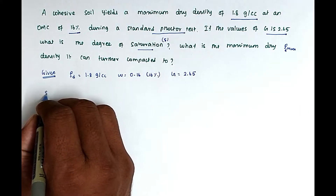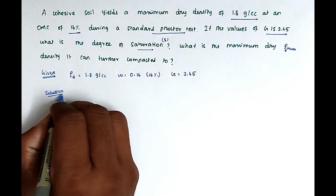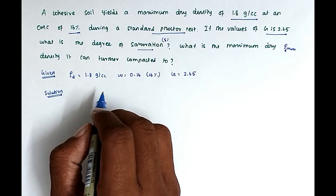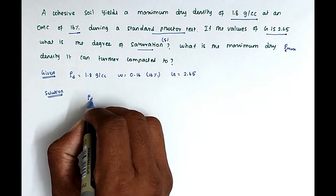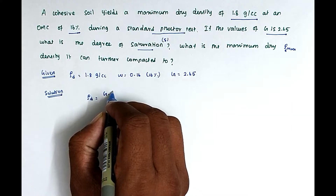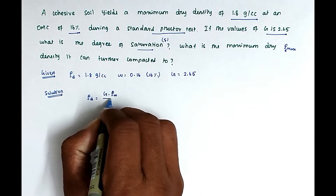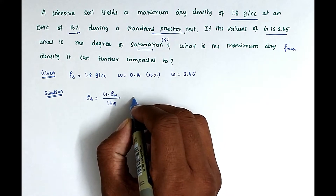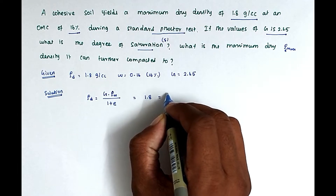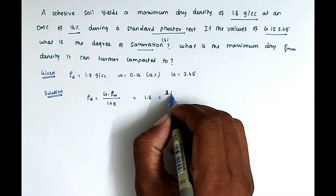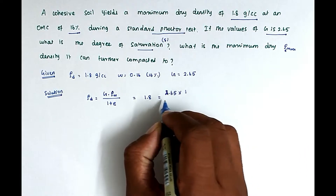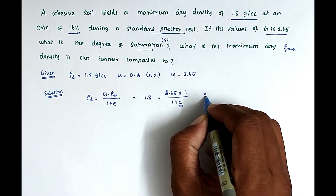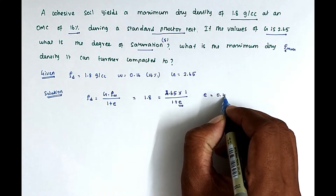So now the solution. First we have to find out the void ratio E. The formula is ρD = G·ρw / (1 + E). Substituting the values: 1.8 = 2.65 × 1 / (1 + E). The only unknown is E, and solving we get E = 0.4722.